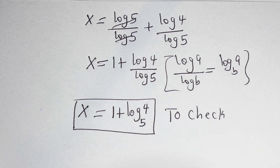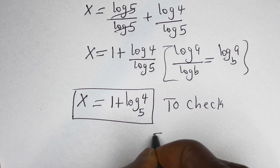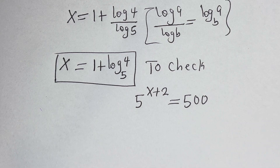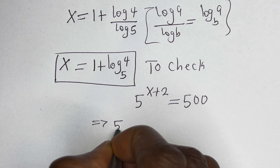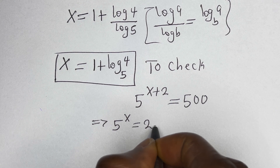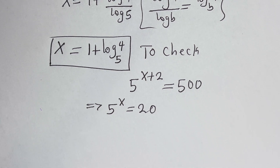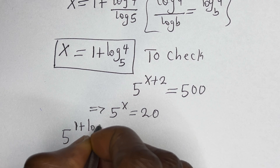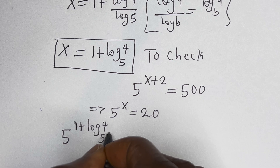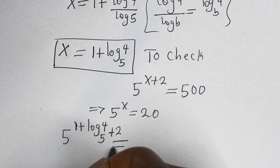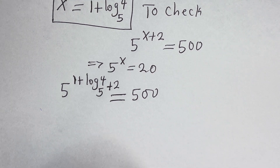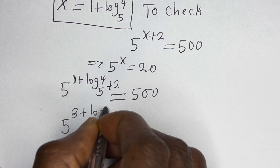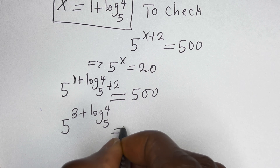To check, we have the given equation: 5 raised to power s plus 2 is equal to 500. This is the same thing as 5 raised to power s is equal to 20. Then we have 5 raised to power 1 plus log base 5 of 4 plus 2 must be equal to 500.